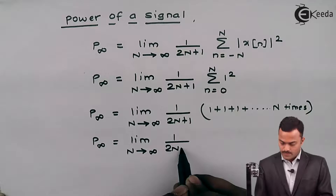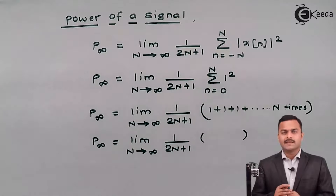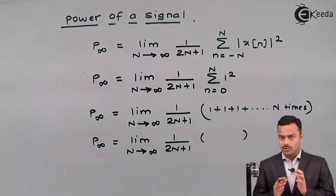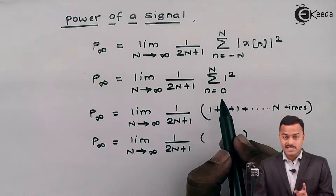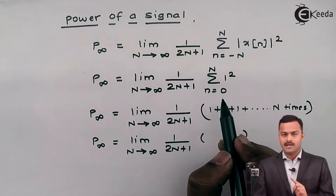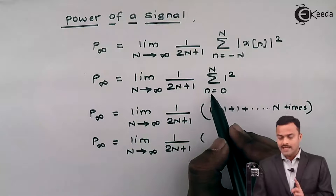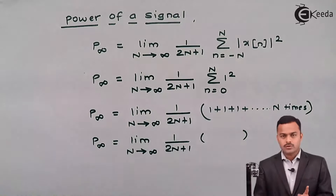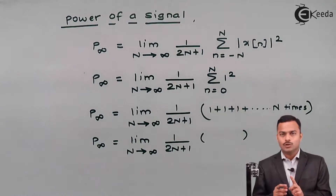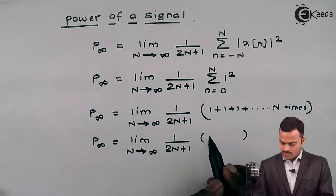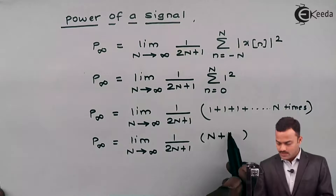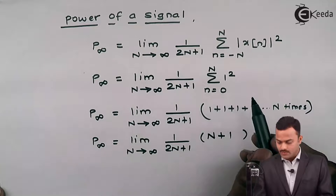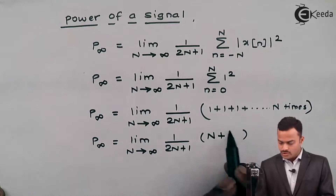Now this becomes: limit N tends to infinity of 1/(2N+1). Note that small n starts from 0, not 1, so do not forget to account for n = 0, where one more 1 gets added. So I get a total of N+1 terms, where the +1 accounts for the instant where n = 0.